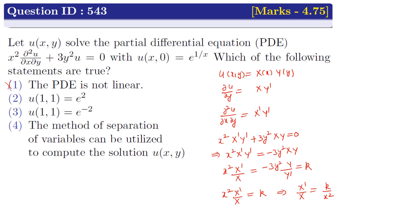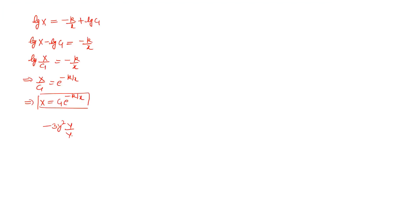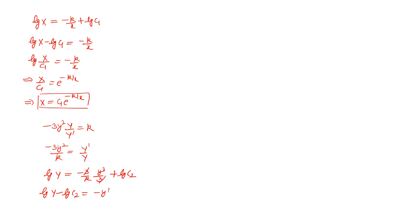Taking the second and third terms: (−3y²·Y)/Y′ = k, which rearranges to Y′/Y = −3y²/k. Integrating both sides: log Y = −(3/k)·(y³/3) + log c₂. The 3s cancel, giving log(Y/c₂) = −y³/k, so Y/c₂ = e^(−y³/k). Therefore Y = c₂·e^(−y³/k).